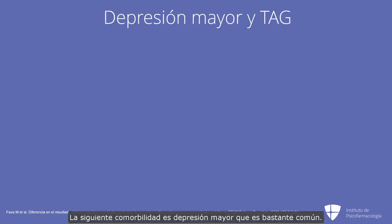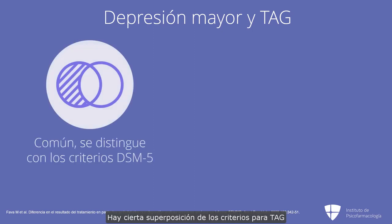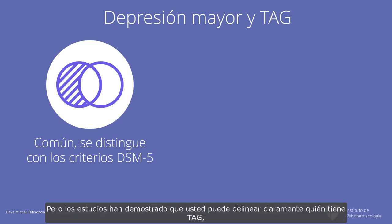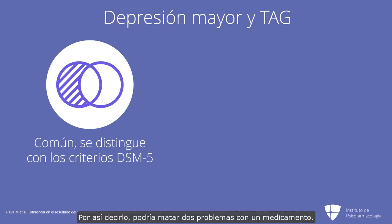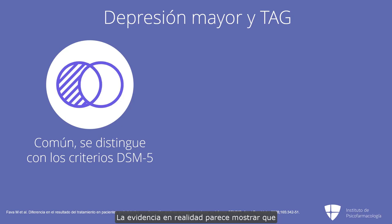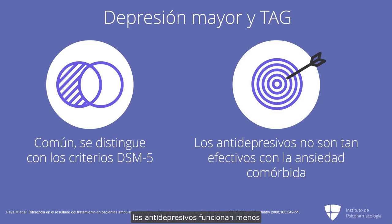The next comorbidity is major depression, which is quite common and shares some overlapping criteria with GAD. Studies have shown that you can clearly delineate who has GAD, who has depression, and who has both, if you work carefully with DSM-5 criteria. You might hope to kill two problems with one drug, but unfortunately the evidence does not support that — antidepressants actually seem to work much less well for major depression when there is comorbid anxiety than when there is not.